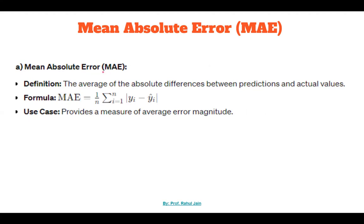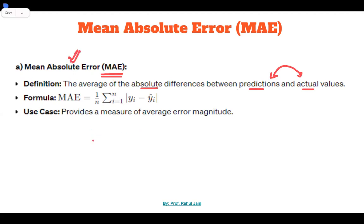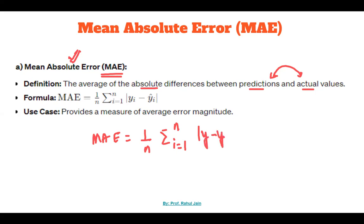The first terminology is Mean Absolute Error. Mean Absolute Error is the average of absolute differences between the prediction value and the actual value. Whatever difference exists between the prediction value and actual value is considered as the error. The formula is: MAE = (1/n) × Σ |actual − predicted|, summing from i=1 to n.